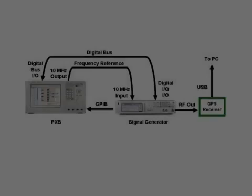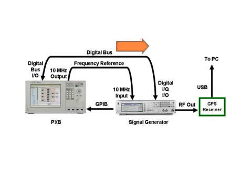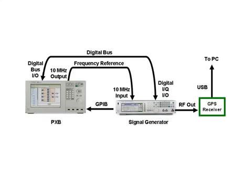The configuration for the system is shown here. The N7609B Signal Studio software creates the GPS baseband signal in the PXB. This digital baseband signal is then sent over the LVDS digital bus to the MXG signal generator, where it is upconverted to the GPS RF frequency and sent to the GPS receiver. The GPS receiver sends its information to the U-Blox Evaluation software through a USB interface.